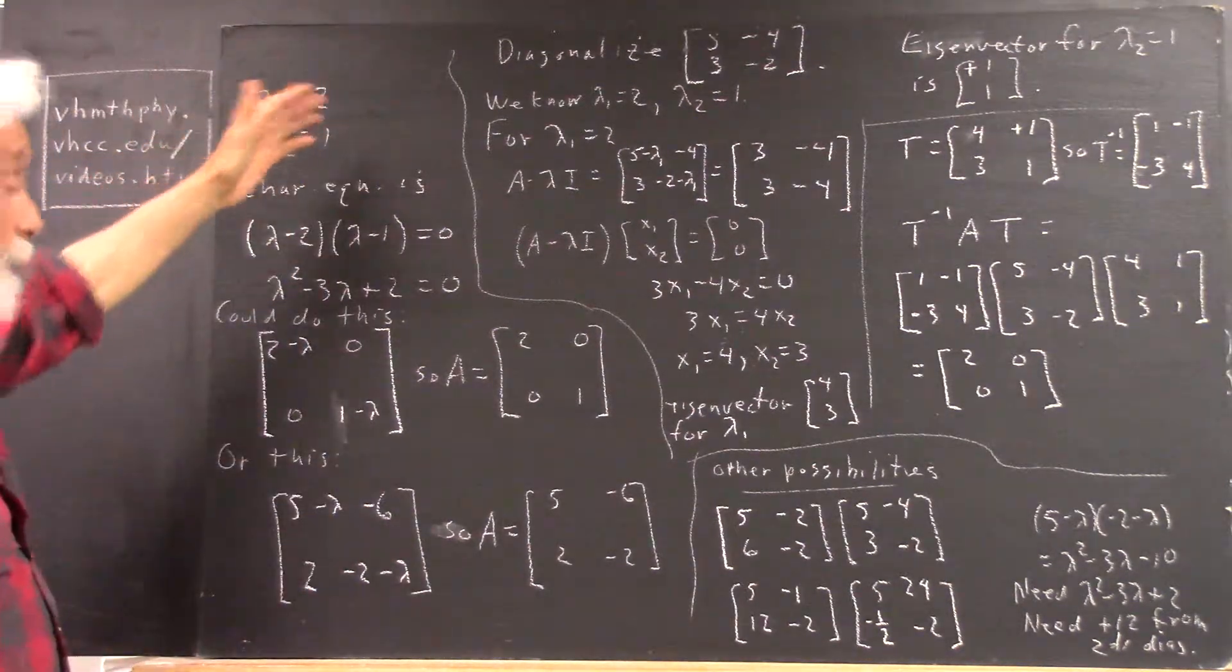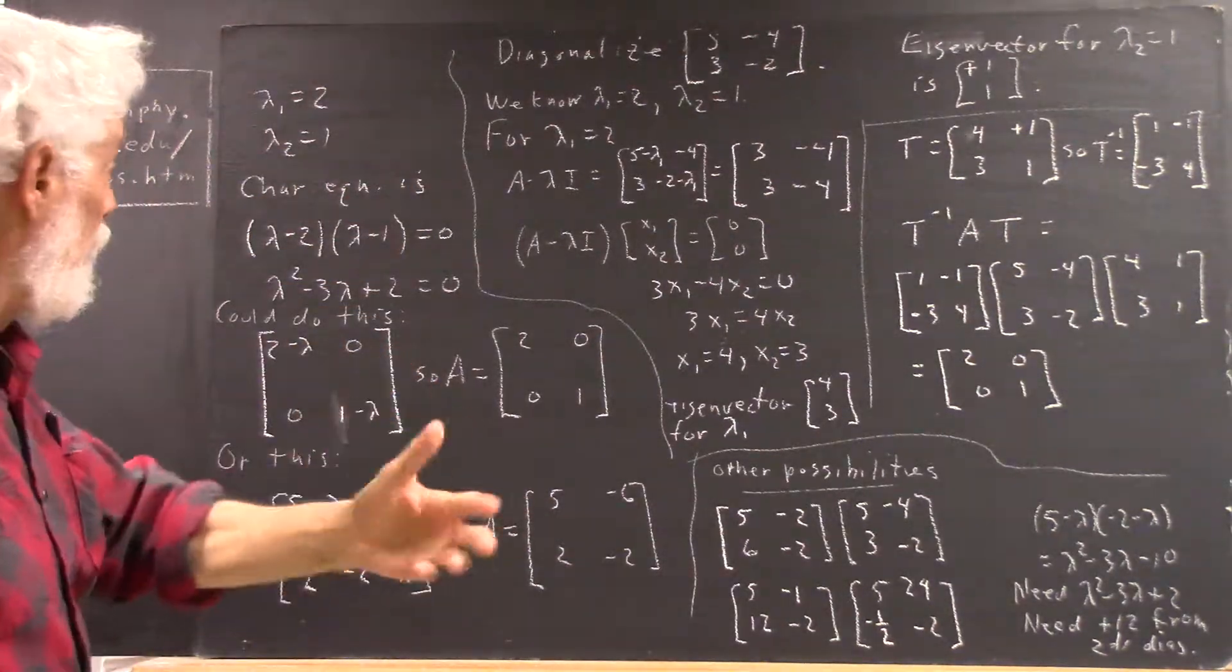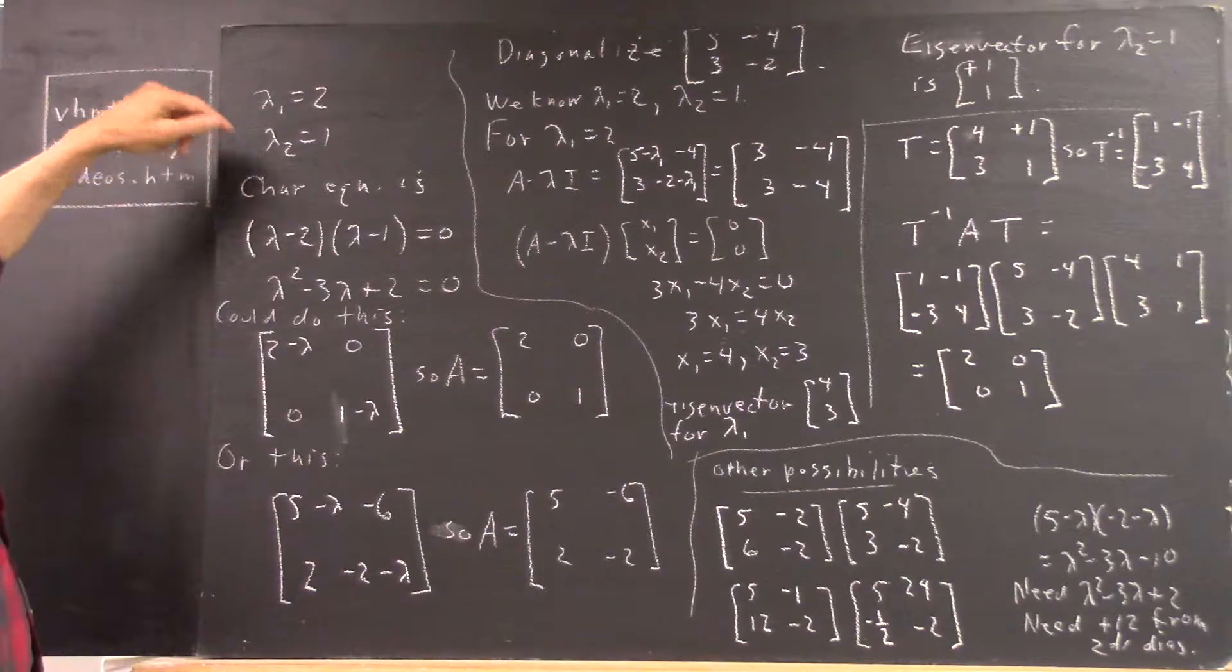I could have let lambda 1 equal 1, lambda 2 equal 2, but then you might confuse the subscripts with the eigenvalues. So I did that.